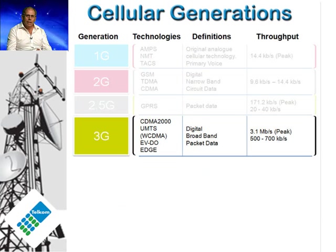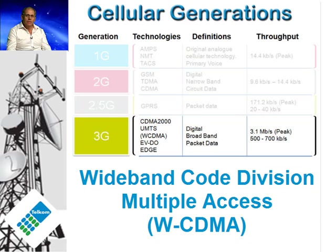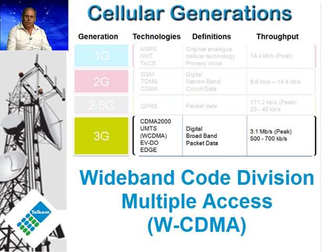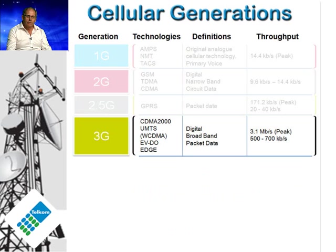UMTS, one of the later 3G technologies, uses something called Wideband Code Division Multiple Access, or commonly known as WCDMA. This is a radio access technology that offers greater spectral efficiency and bandwidth to mobile network operators. In other words, more simultaneous users, more speed, and more bandwidth. WCDMA is therefore the underlying radio technology we now use in our cellular networks.